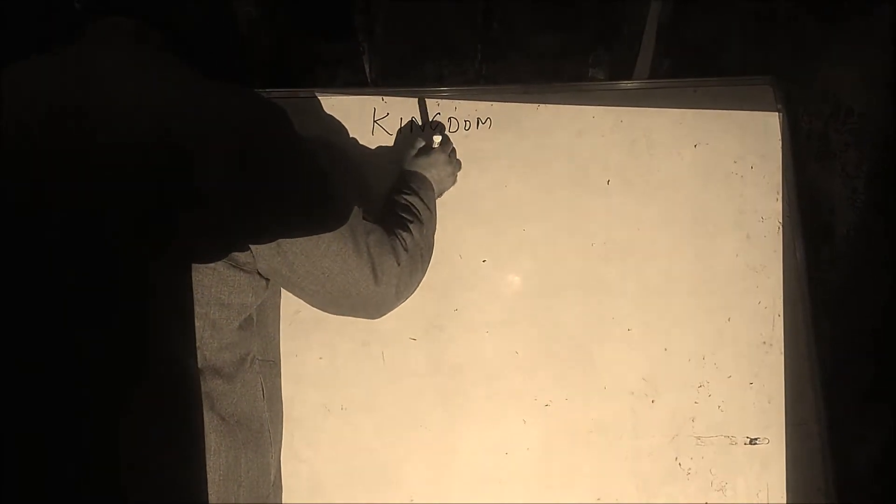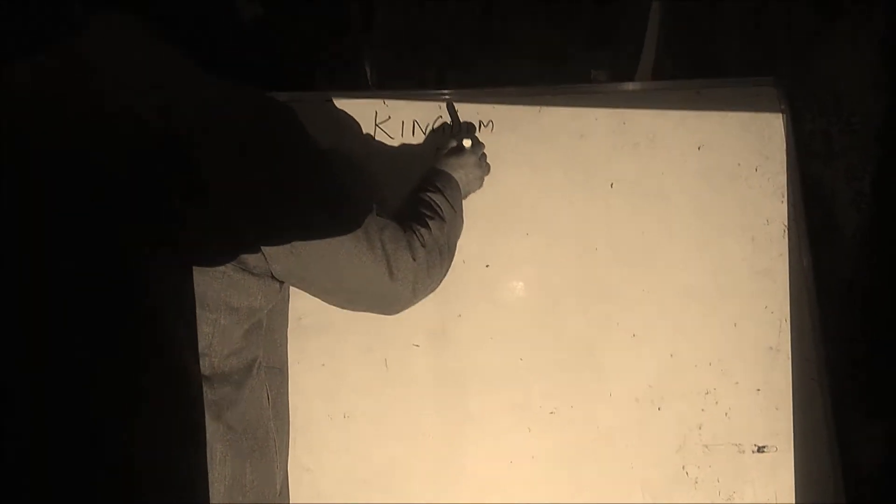Dear students, Assalamualaikum. Today we are going to talk about Kingdom Animalia. In the entire world, there are about 1.7 million creatures, and out of this, there are 1.2 million creatures known as animals, which are included in Kingdom Animalia.